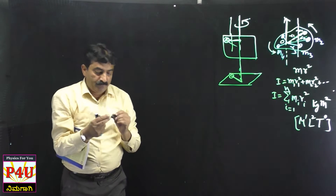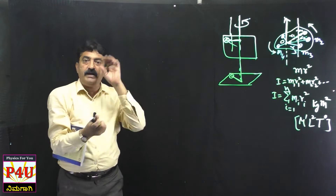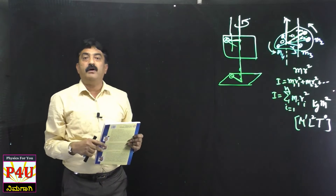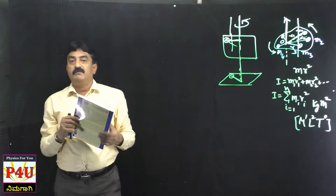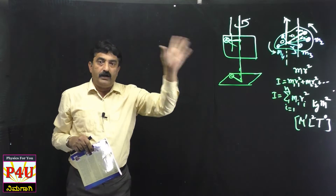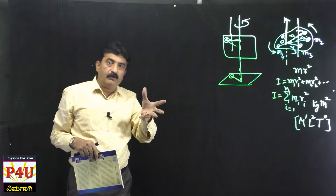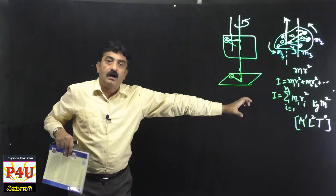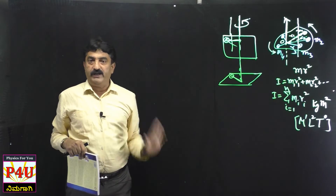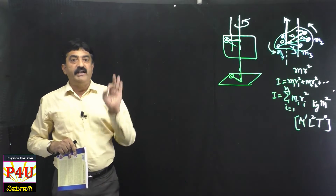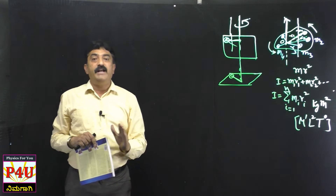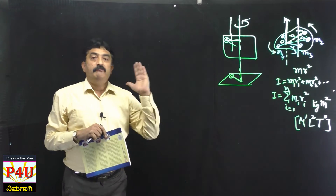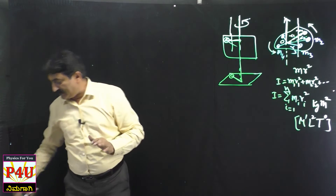The moment of inertia of a body depends on the axis of rotation, and also on the mass of the body, the distribution of mass of the body, and the shape of the body. So, moment of inertia varies from object to object, varies with the axis of rotation, varies with shape, and varies with the distribution of mass.